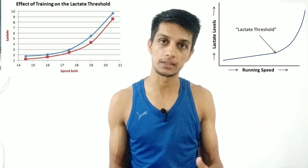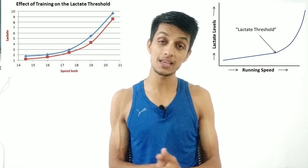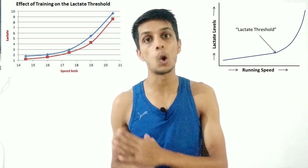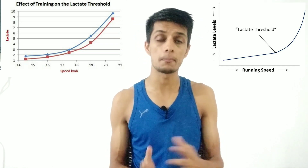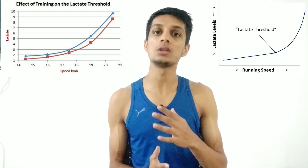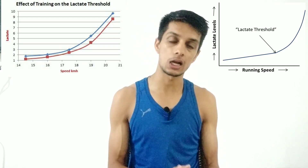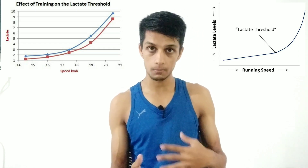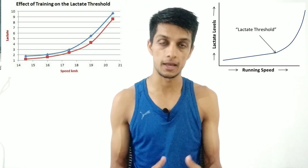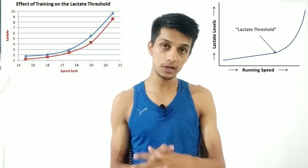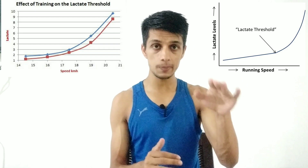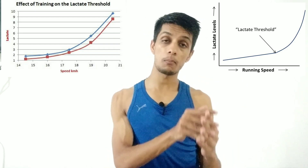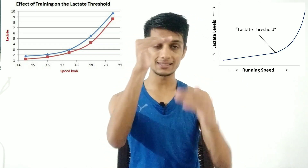But it takes a lot of time. It takes a long time to condition the aerobic system — around 3 to 5 years of aerobic training. And Tempo Training is a very important part of that process. You have to do Tempo Training at the pace where Lactate Threshold is produced in your body.